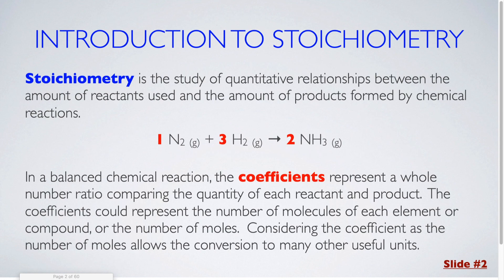Stoichiometry is the study of quantitative relationships between the amount of reactants used and the amount of products formed by chemical reactions. In a balanced chemical reaction, the coefficients represent a whole number ratio comparing the quantity of each reactant and product. The coefficients could represent the number of molecules for each element or compound, or the number of moles. Considering the coefficients as the number of moles allows the conversion to many other useful units.